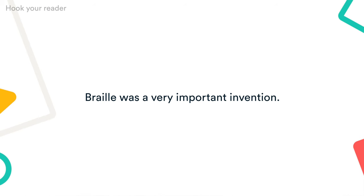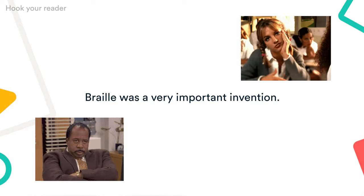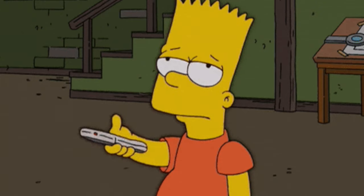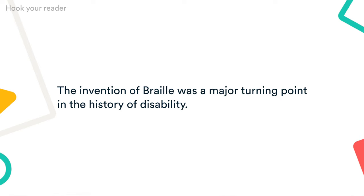So you're writing an essay about the history of the braille writing system. We might start by saying something like, 'Braille was a very important invention.' Sure, that tells us what the essay is about, but it's a bit plain and boring. Let's try turning it into a hook: 'The invention of braille was a major turning point in the history of disability.' That's more like it. Instead of just stating our topic, we're making a bold claim about its place in history and linking it to relevant social themes.